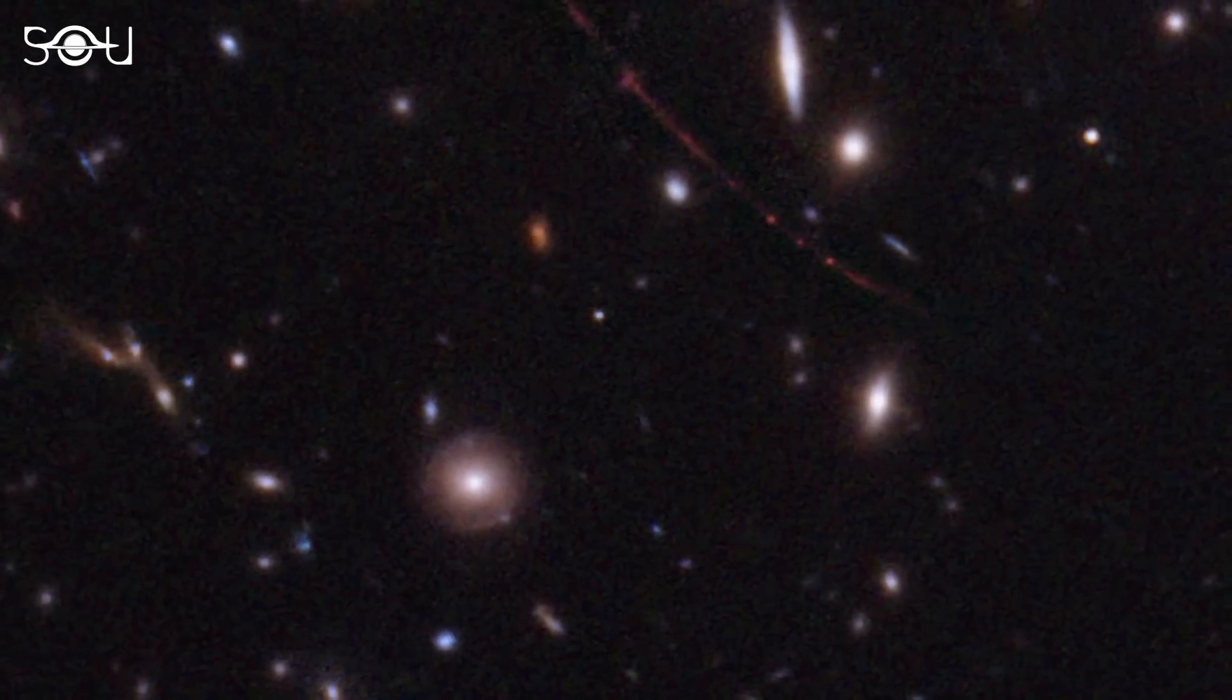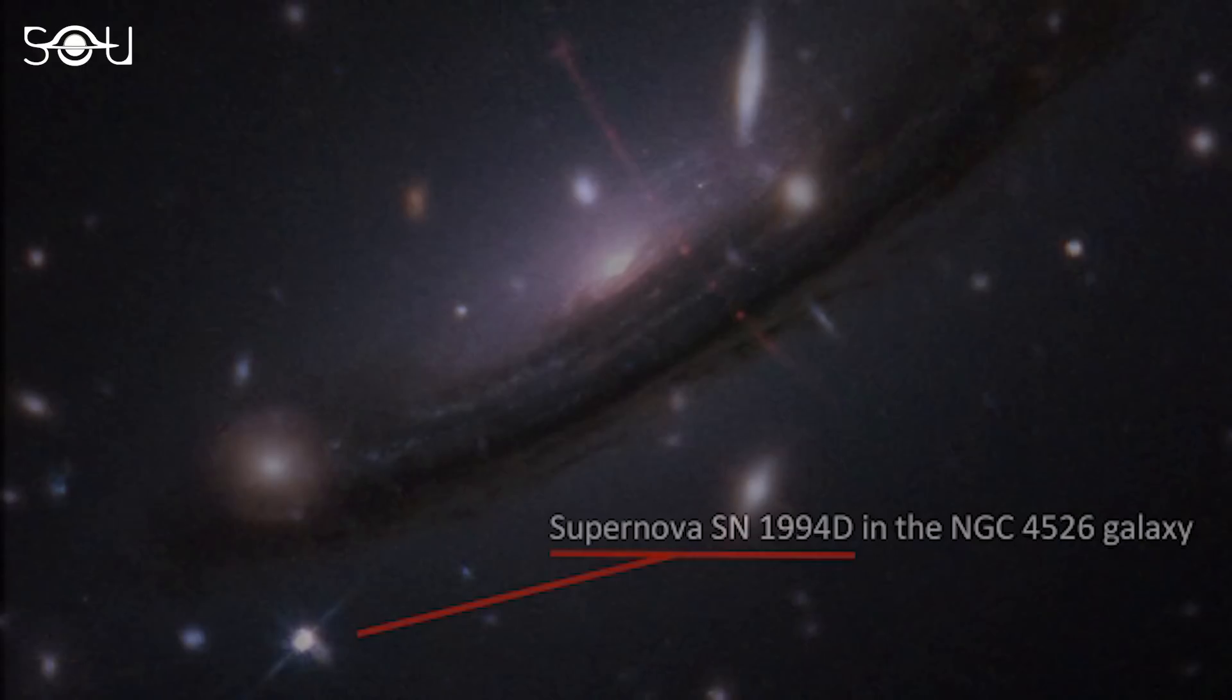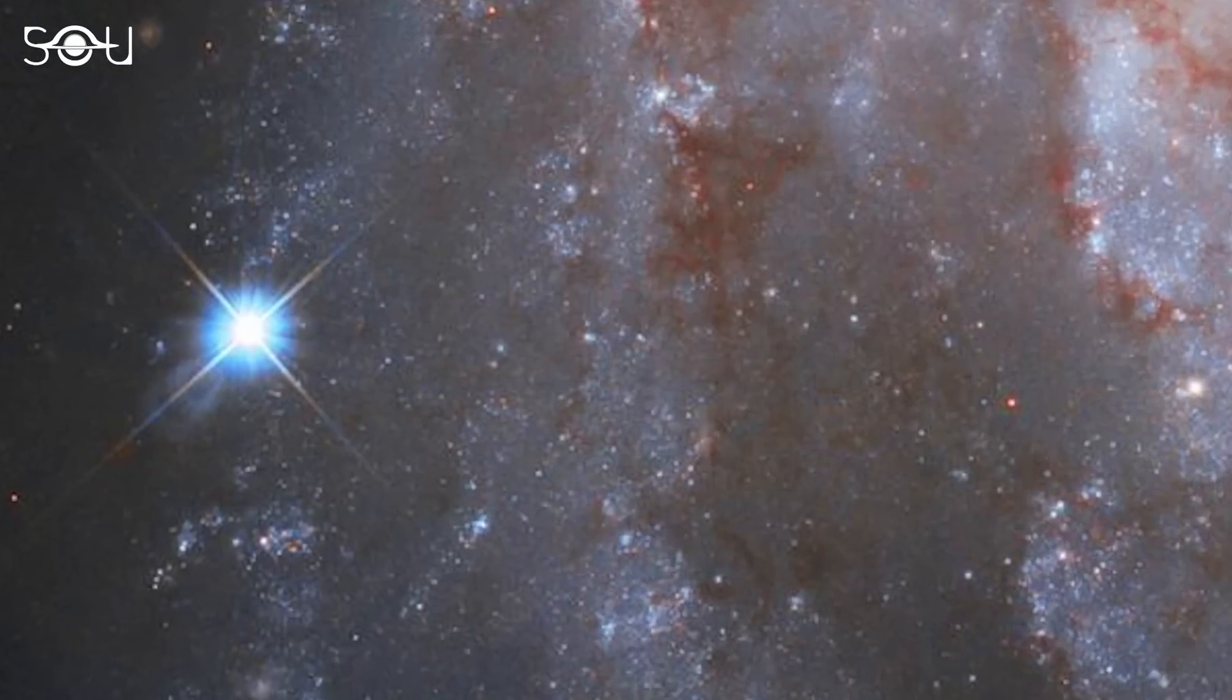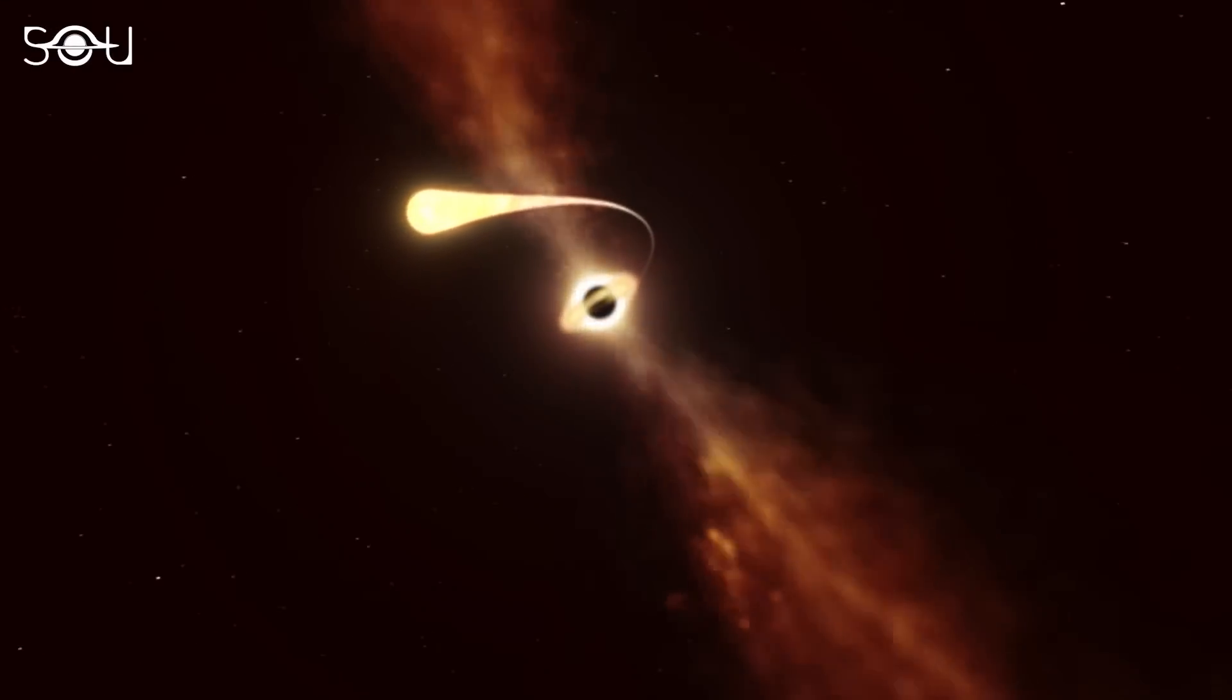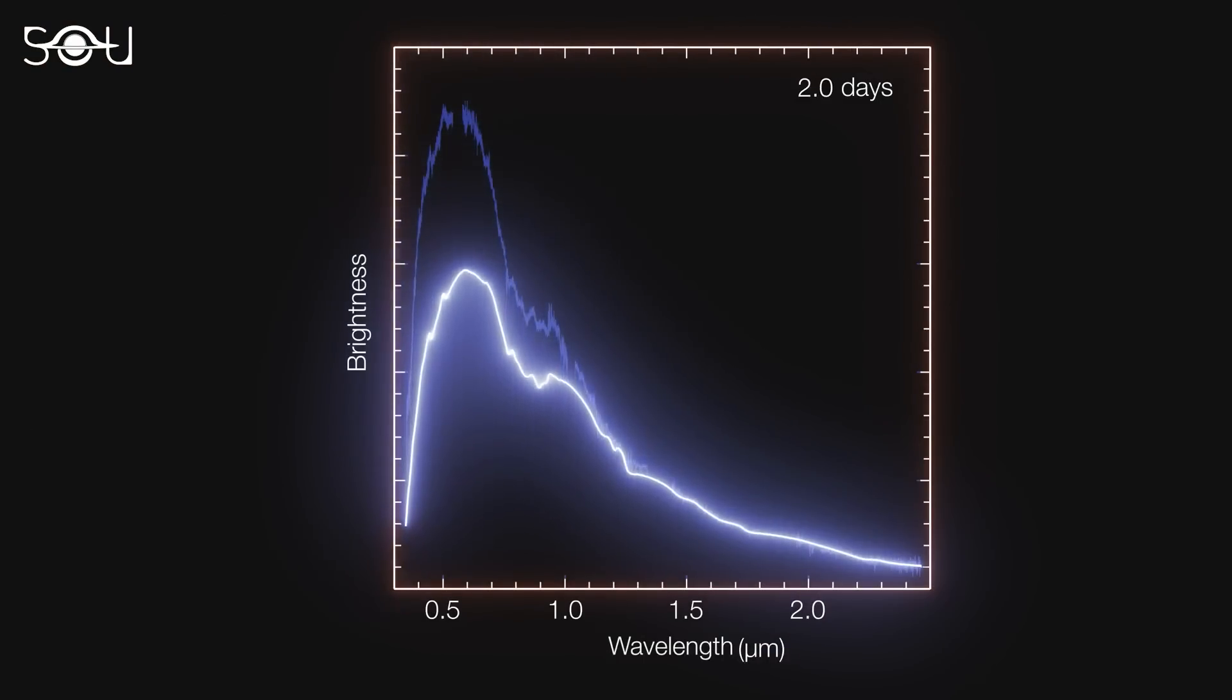But the team saw bright objects sitting on the edge of the distorted galaxy. Luminous sources in distant galaxies tend to be highly energetic events such as novas, supernovas, or tidal disruptions caused by black holes.